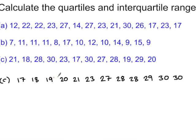Finally, in part C we have 12 scores, so the median is between the 6th and 7th scores, which is 25. The lower quartile is between the 3rd and 4th score, which is 19.5, and the upper quartile is between the 9th and the 10th score, so 28.5.